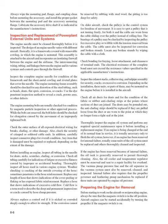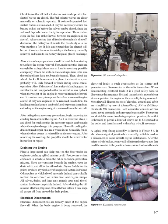Preparing the engine for removal: before starting work on the aircraft or reciprocating engine, always ensure the magneto switch is in the off position. Aircraft engines can be started accidentally by turning the propeller if the magneto switch is on. Check that all fuel selectors or solenoid operated fuel shutoff valves are closed. If solenoid operated fuel shutoff valves are installed, it may be necessary to turn the battery switch on before the valves can be closed. After ensuring all fuel to the engine is shut off, disconnect the battery to eliminate the possibility of a hot wire starting a fire. If the aircraft will be out of service for more than six days, the battery is usually removed and taken to the battery shop.